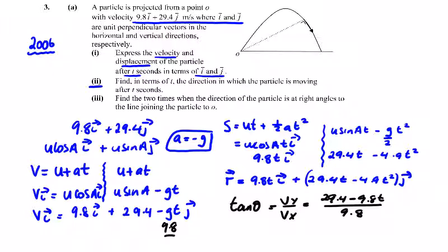9.8 goes into 29.4 exactly three times, and into 9.8 once, so 3 minus t. This is the direction in terms of t, the direction in which the particle is moving after t seconds.